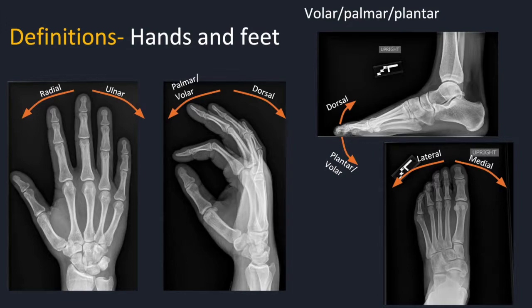In the hands and feet, directions are a bit different. For the hand, towards the thumb is radial, and towards the little finger is ulnar. On the lateral view, towards the palm is palmar or volar, and towards the back of the hand is dorsal. The foot is similar with volar or plantar and dorsal, but the AP foot is more straightforward — lateral and medial.